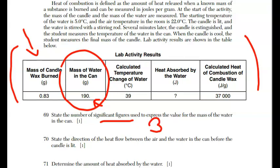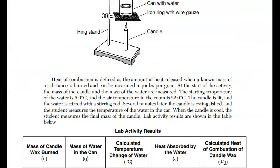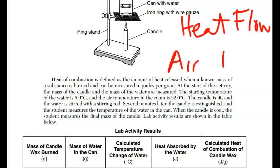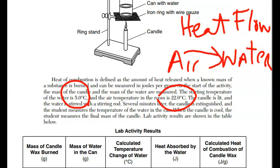For question 70, it says state the direction of heat flow between the air and the water in the can before the candle is lit. We know that heat flows from hot to cold, but we're going to have to go back and read a little bit more about the passage to figure this out. We're looking at what's going on as far as heat flow between the air and the water. The starting temperature of the water is five degrees Celsius and the air temperature in the room is 22 degrees Celsius. That tells me then the air is a higher temperature, more energy than the water. So it's going to flow from the air to the water. That's the answer.